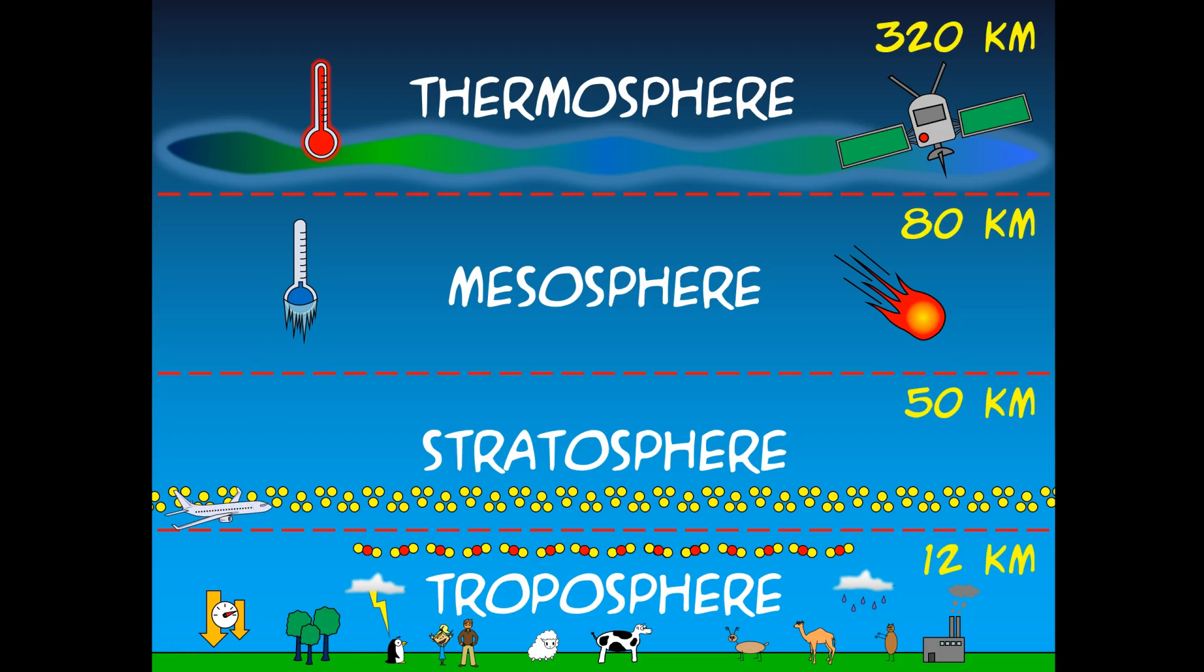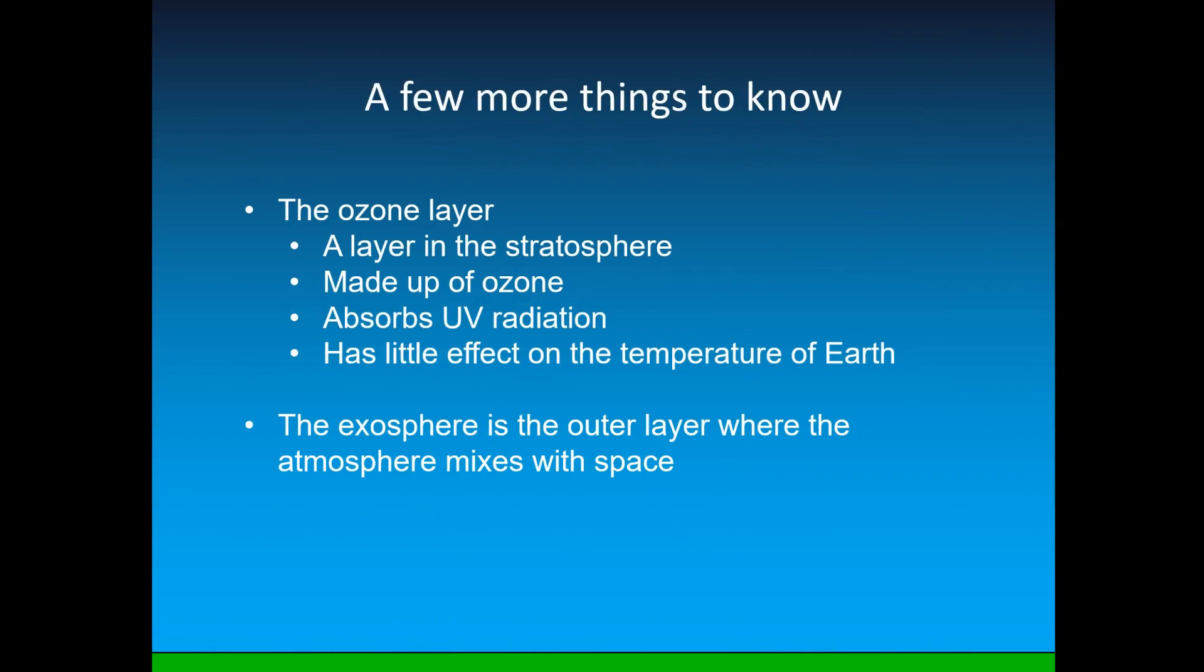There are just a couple more things that you need to know before we move on. The ozone layer. We've mentioned it briefly but I want to repeat. This is a layer in the stratosphere that is made up of ozone which is three oxygen molecules bound together. It absorbs ultraviolet radiation which protects living organisms from damage to DNA and from burns to skin and cataracts. The ozone layer ironically has little effect on the temperature of the earth. You may have heard of a hole in the ozone layer in the past that is actually being repaired due to efforts of civilization but that ozone layer allows more UV radiation which can damage skin and eyes but it actually doesn't change the temperature. And one last thing the exosphere is the outer layer where the atmosphere mixes with space. Some scientists consider this a true layer of the atmosphere while others do not but I wanted you to know that in case you see it somewhere.